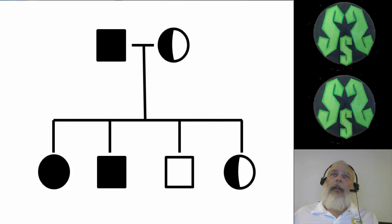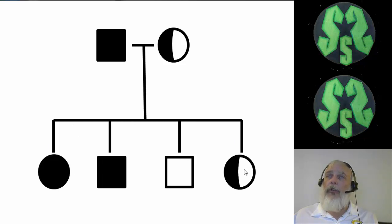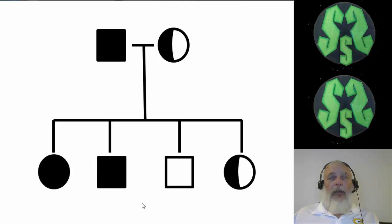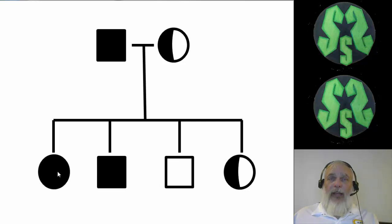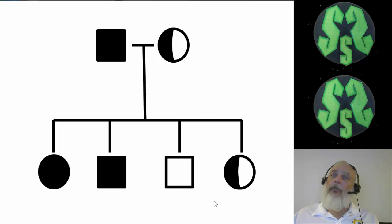In this setup, if we have a colorblind dad — square filled in — and a carrier mom — circle half filled in — they can have children. They have two daughters and two sons. Of their children: one daughter is colorblind and affected, one son is colorblind and affected, one son is unaffected and cannot pass colorblindness on, and one daughter is unaffected but is a carrier who can pass colorblindness on to her child.